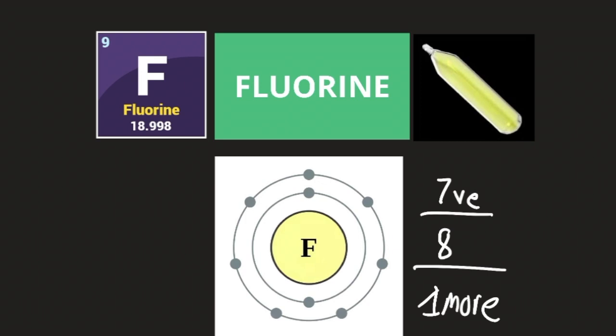Fluorine is not found on its own in the environment because it's so reactive — it takes electrons from the surrounding environment. If it sees sodium, which has one valence electron, it takes it right away, and sodium readily gives it up. If fluorine had all eight of its electrons, it wouldn't need to react so violently with its environment and would be very satisfied.